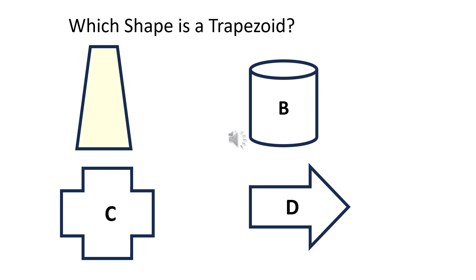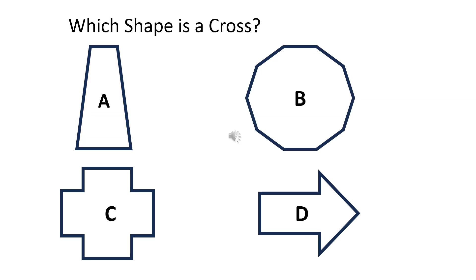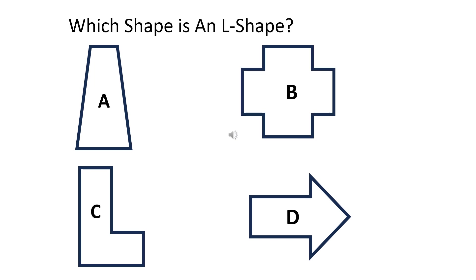The right answer is D. Which shape is a hexagon? The right answer is C. The right answer is D.